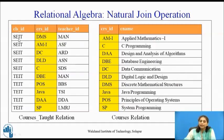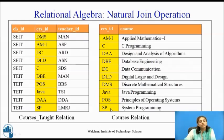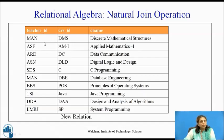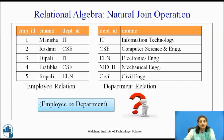There are ten records in courses_taught and ten records in courses, so the Cartesian product yields one hundred records. The common attribute is course_id. Each record is checked: only matching course_ids (e.g., DMS=DMS, AM1=AM1) are retained, giving ten result records with teacher_id, course_id, and course_name. This is the result of the natural join.